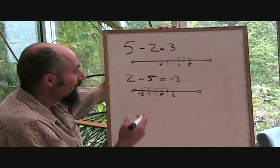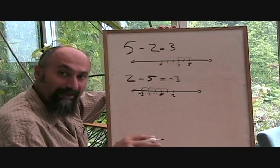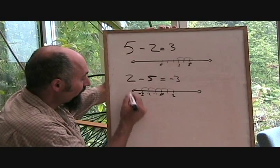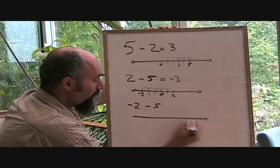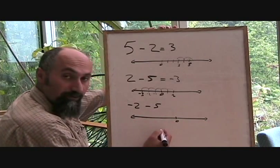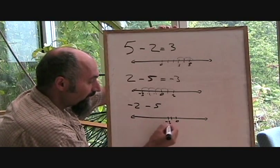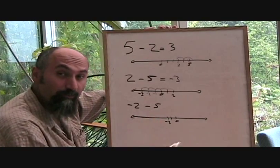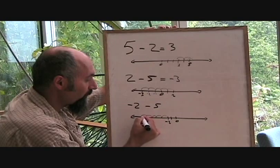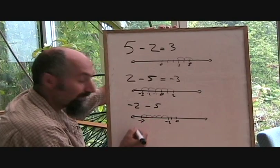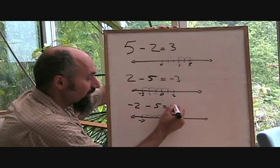Now what happens if you add two negative numbers? Now take a look at this. What if this was negative 2 minus 5? So what you're going to do is put your 0 there. You're going to start at negative 2 and again you're moving backwards 5 steps. So you're going to go 1, 2, 3, 4, 5. So right now you're at negative 7 equals negative 7.